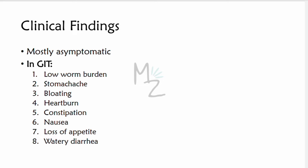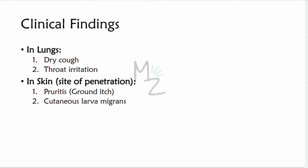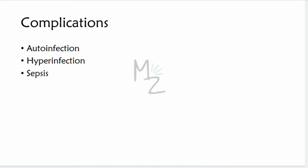Clinical findings: most patients are asymptomatic, but symptoms can occur based on location — GI tract, respiratory system, or cutaneous systems. In the GI tract, low worm burden mostly does not cause symptoms, but stomach ache, bloating, heartburn, constipation, nausea, loss of appetite, and watery diarrhea can occur. In the lungs, dry cough and throat irritation can occur due to pneumonitis. In the skin, pruritus (ground itch) can occur at the site of larval penetration, as with hookworm. Strongyloides also causes cutaneous larva migrans with rapid migration and perianal involvement. Complications include auto-infection, hyperinfection (massive reinfection), and sepsis.